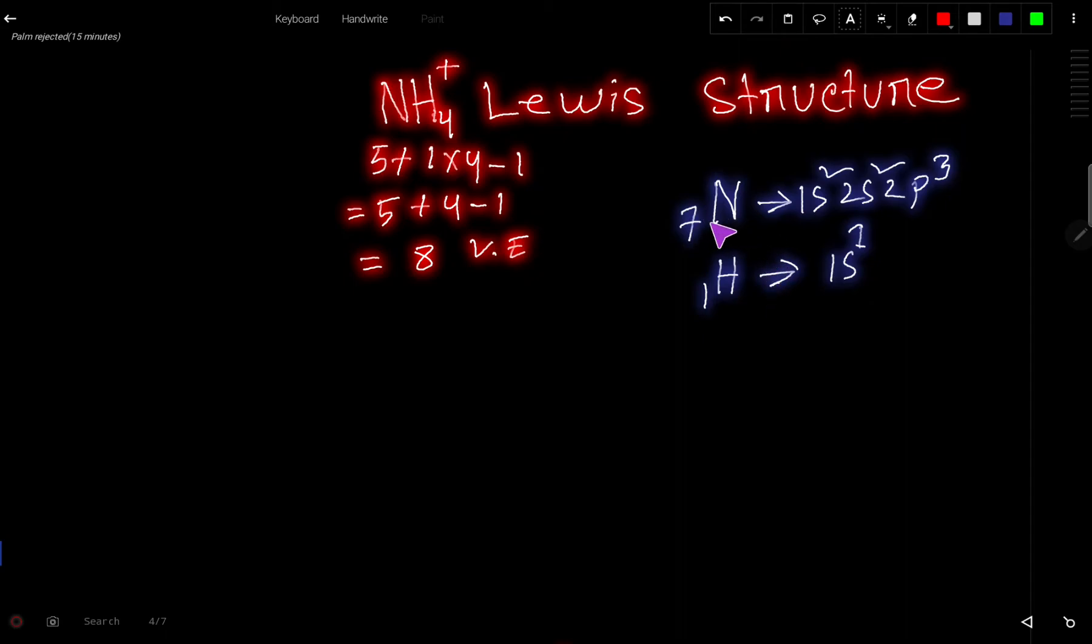Here is another way to find out the valence electrons. Nitrogen's atomic number is seven. So if you do the electronic configuration, you will get this configuration. Here the outermost shell or valence shell is second shell, and in second shell we have 2 + 3 = 5 valence electrons. And in hydrogen atom we have one valence electron, right?